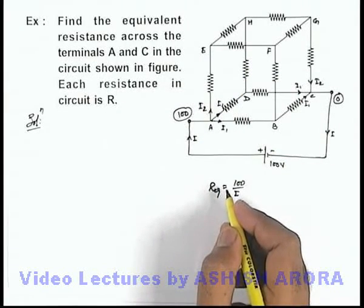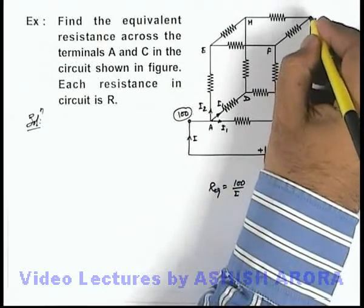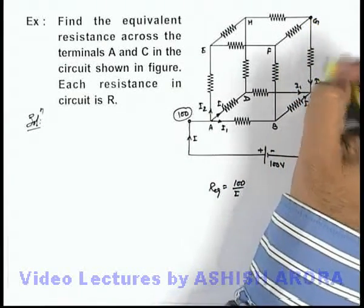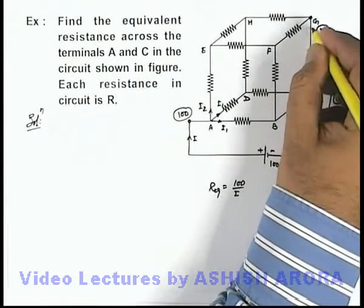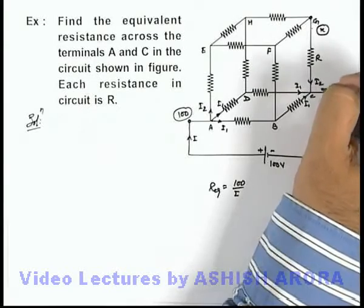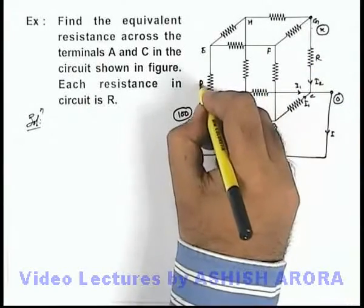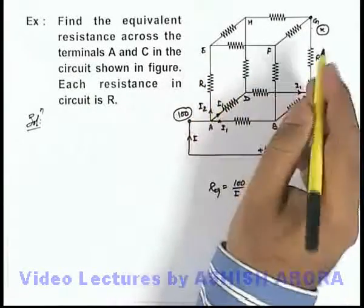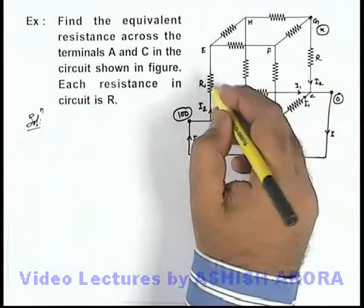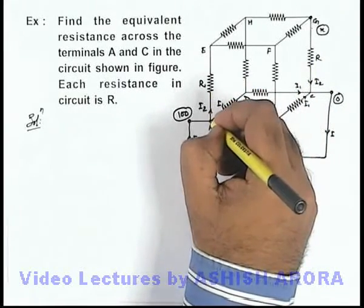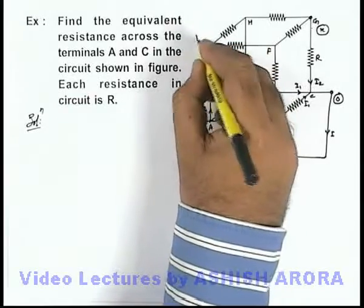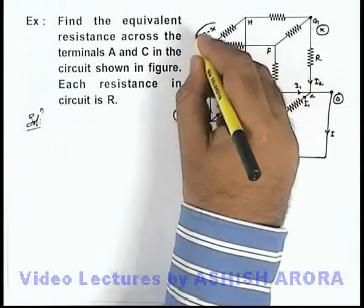And here if we talk about the potentials at different parts of the circuit, then at point G, say potential is x. So potential difference across this resistance will be x minus zero. The symmetric resistance is here, so its potential should also be x because the same current is flowing in the same resistance. So if here potential is 100, this must be taken as 100 minus x.